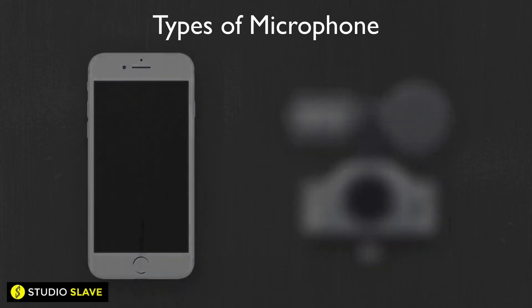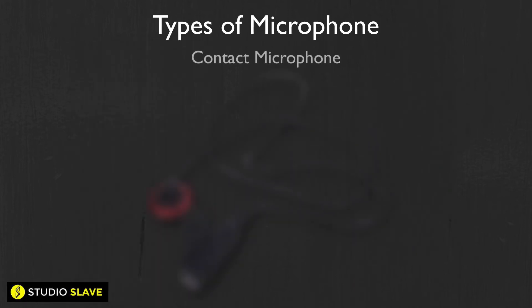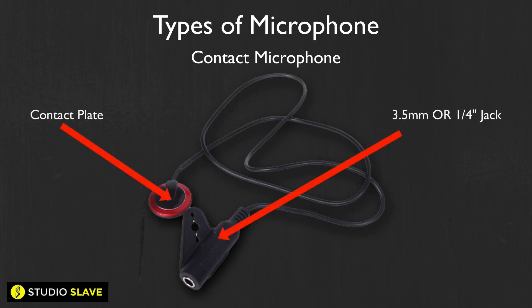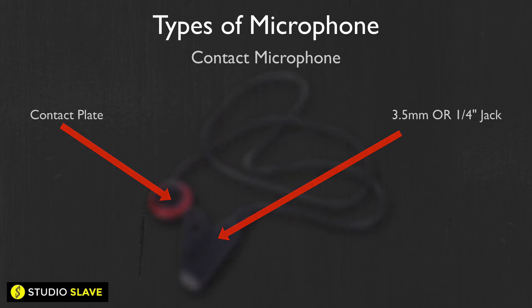You can also use a contact mic, which is used by attaching it to a resonant sound source or whatever you want to record. You could attach it to any surface — a lot of people use these for guitars, or maybe you want to record something outside like a fence or a wall, or absolutely anything — and the contact mic will pick up the sound directly from that surface.